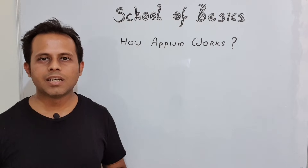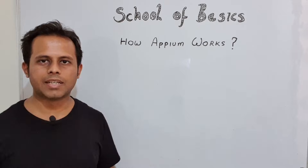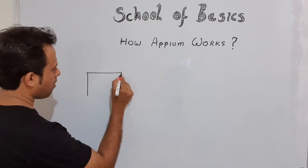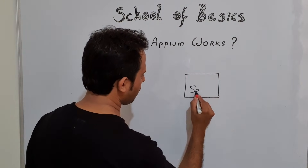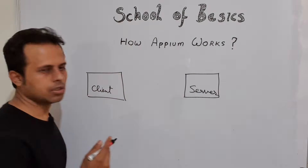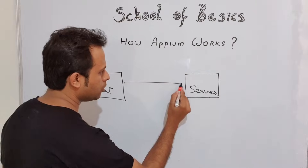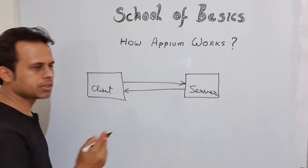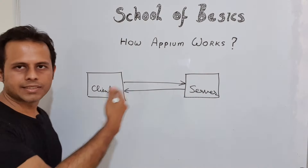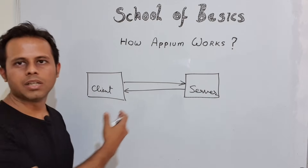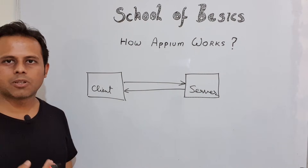Appium works in a client-server architecture or client-server design. We have a client and a server that interact with each other using a common protocol over a common network. The client sends a request to the server and the server sends back the response. In Appium we have the same concept and same design.